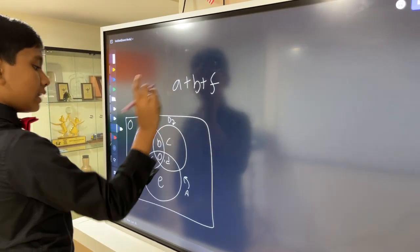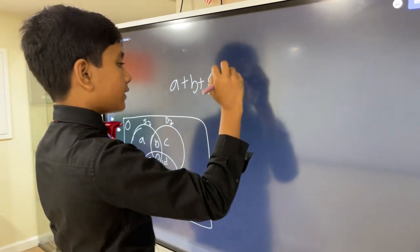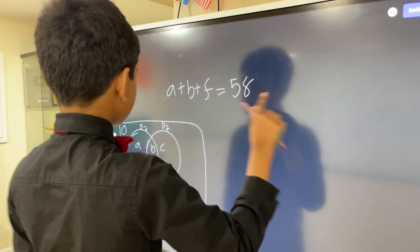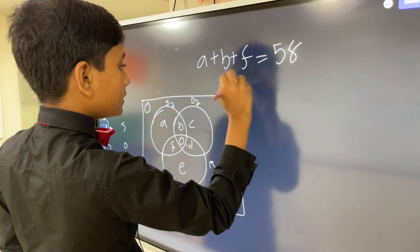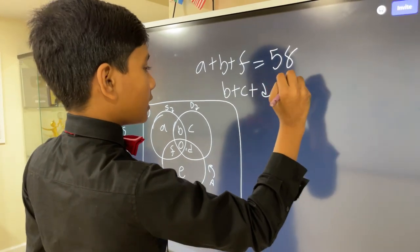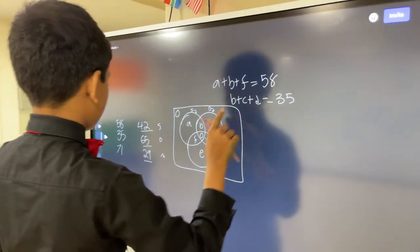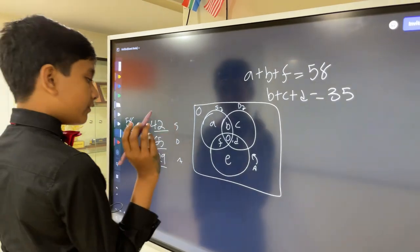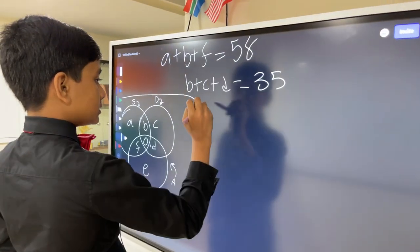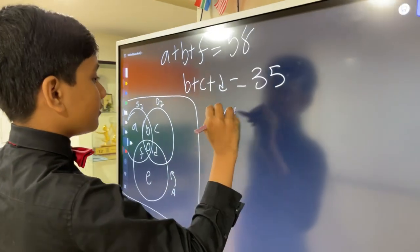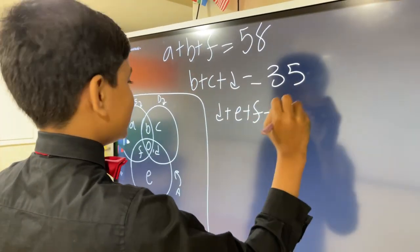So, of the singing circle, A plus B plus F, all of that has to be 58. Then, for the dancing circle, B plus C plus D, that all has to be 35. And finally, for the acting circle, D plus E plus F, that has to be 71.